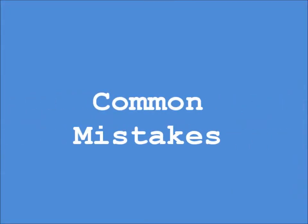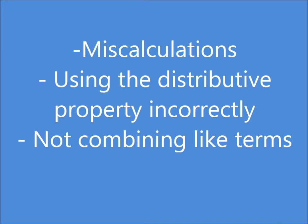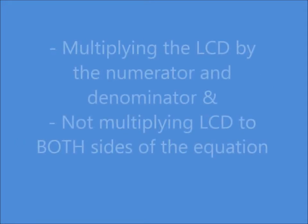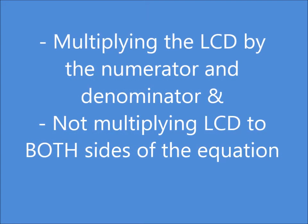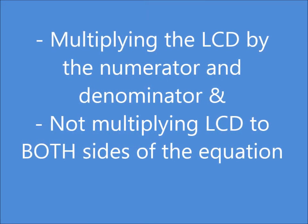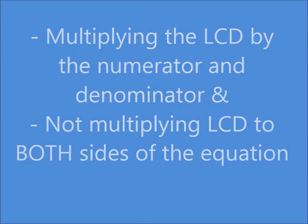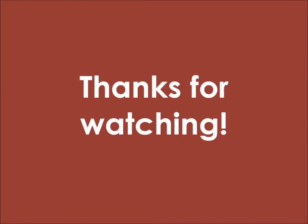Now that we went over how to do these equations, let's look at the common mistakes you can make while doing them. Most of the time it's miscalculations, like adding 8 and 11 and getting 21. Or using the distributive property incorrectly. Or not combining the like terms together. While using fractions, sometimes you can make a mistake by multiplying the LCD by the numerator and denominator, or not multiplying the LCD to both sides of the equations. Thanks for watching and I hope I was able to help you understand how to solve multistep equations. Until next time, bye!